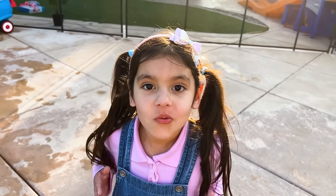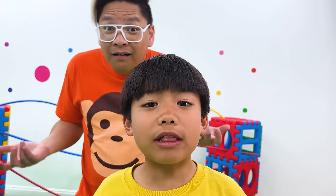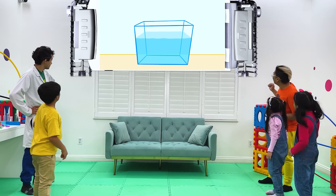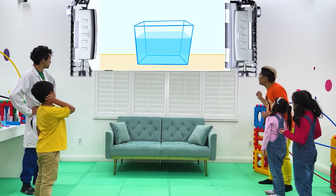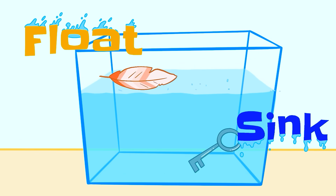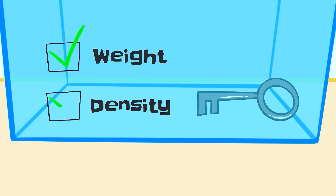Uncle, why do things float or sink? I'm not sure. Let's ask Scientist Jim! Professor Jim! What do you need? Why do things float or sink? Interesting question. Let me show you. Do you know why some things float and some things sink? Well, there are two reasons: weight and density.